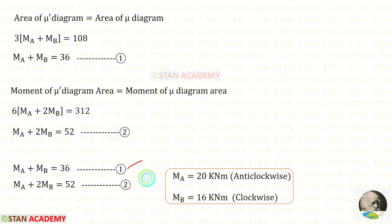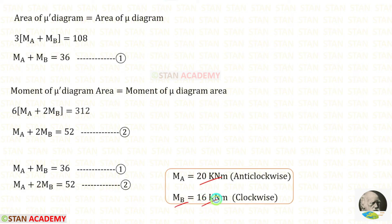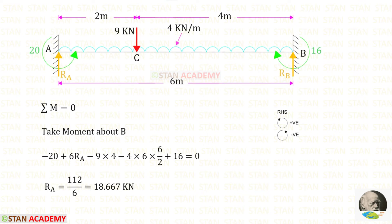Now we can solve both equations to find MA and MB. Using a calculator to solve the simultaneous equations, for MA we get 20 kNm and for MB we get 16 kNm. We know that MA acts in the anti-clockwise direction and MB acts in the clockwise direction. We have now calculated the fixed end moments MA and MB.